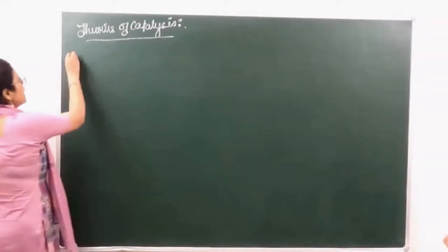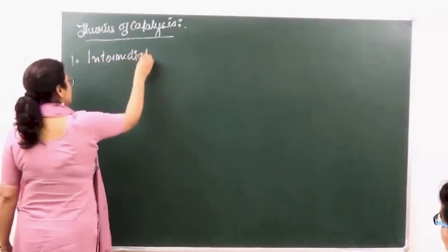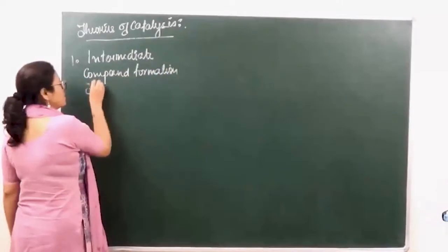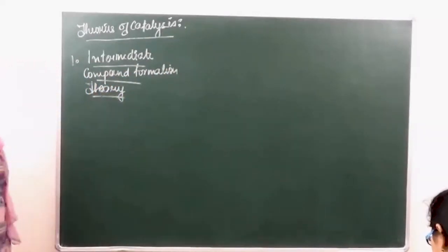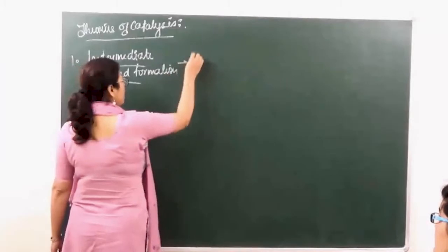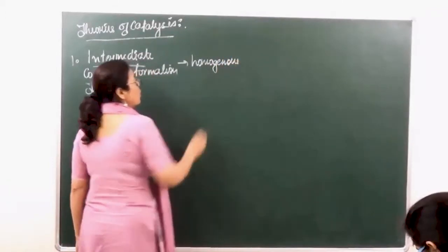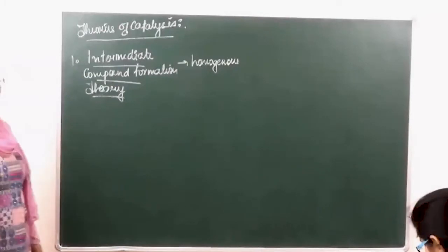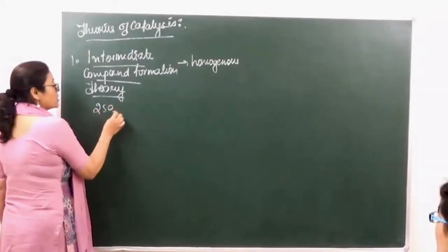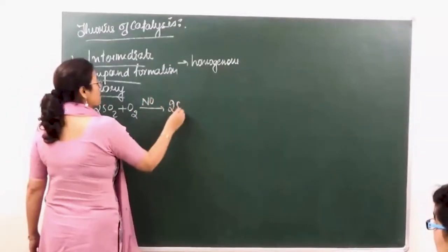The first theory is known as the Intermediate Compound Formation Theory. This theory gives us an explanation about homogeneous catalysis — in which the reactants and the catalyst are all in the same phase. An example we had taken was the oxidation of sulphur dioxide in presence of nitric oxide as a catalyst to give us sulphur trioxide.